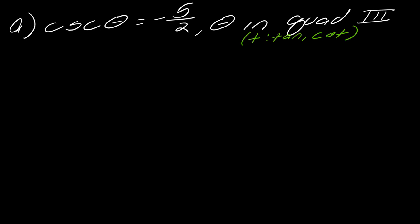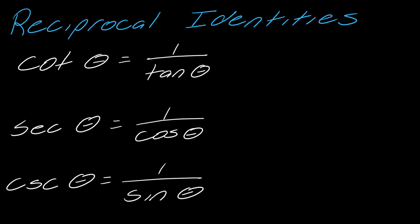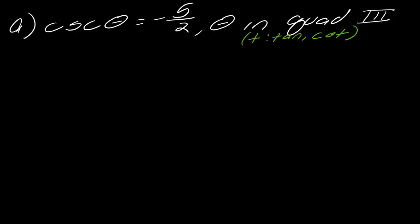I've got cosecant of theta is negative 5 over 2. I can use one of the reciprocal identities right out of the box. Cosecant of theta equals 1 over sine of theta, so these are reciprocals of one another. If I take the reciprocal, I get negative 2 over 5, and that'll be the value of sine of theta.